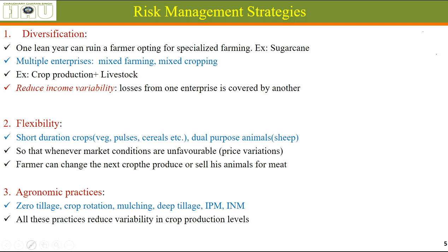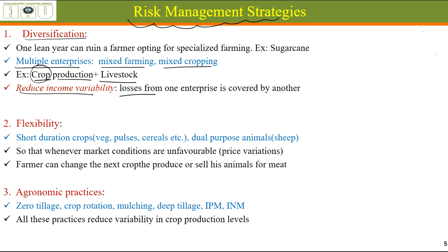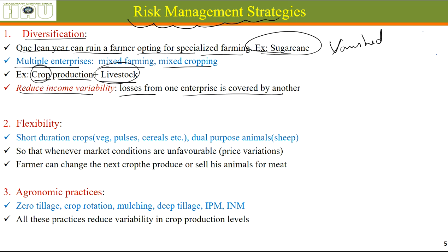Risk management strategies — how do we manage all these risks? The first strategy is diversification, meaning multiple enterprises should be followed: mixed farming, mixed cropping, different types of crops, rearing different types of livestock simultaneously. This reduces income variability. If crop production suffers losses but livestock products give some income, the family keeps running. One lean year can ruin a farmer opting for specialized farming — for example, if sugarcane fails due to disease, there is zero income.